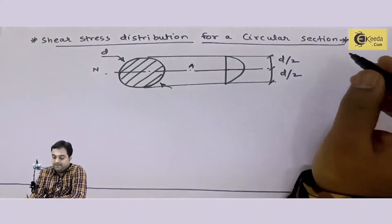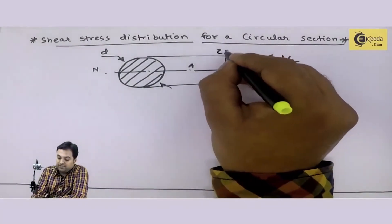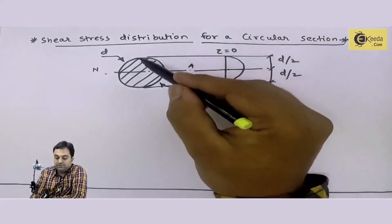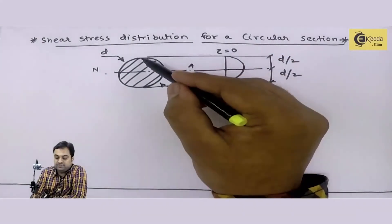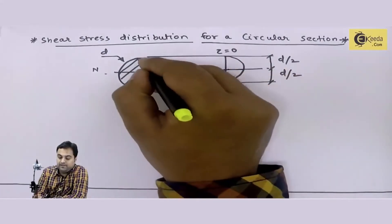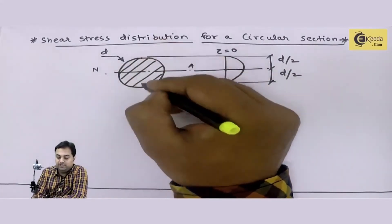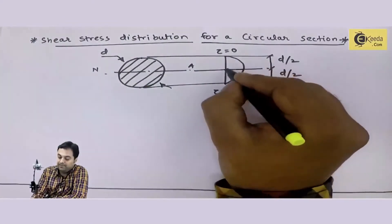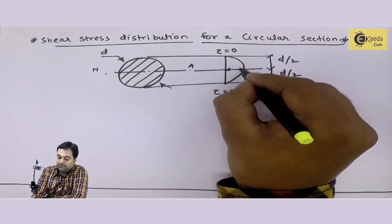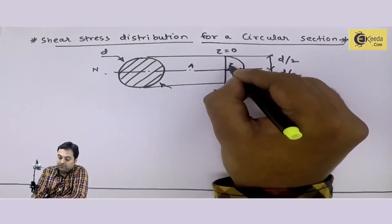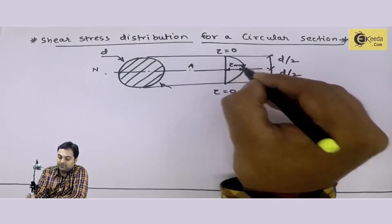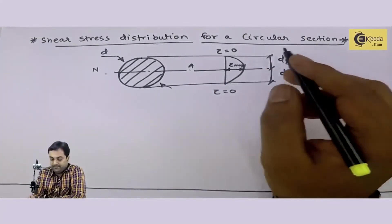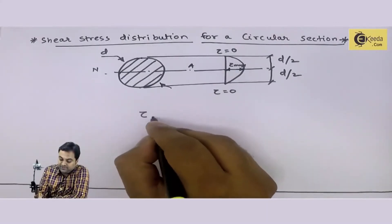Shear stress will be 0 at the extreme ends, because at the top of this circular section there is no area above that point, and from the bottom also there is no area. The maximum shear stress tau-max will be at the neutral axis.